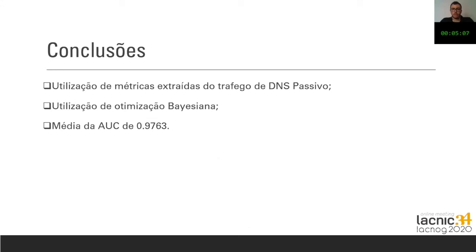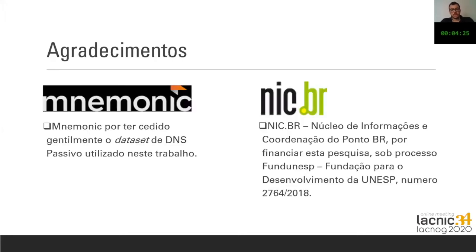Using metrics obtained from the passive DNS traffic, we managed to determine which domains were malicious. In order to have better results, we used a Bayesian optimization, which led to obtaining better performance. The AUC mean was 0.9763. This shows that our model has more than 90% positive results. I would like to thank Mnemonic for having provided the data set for this study.